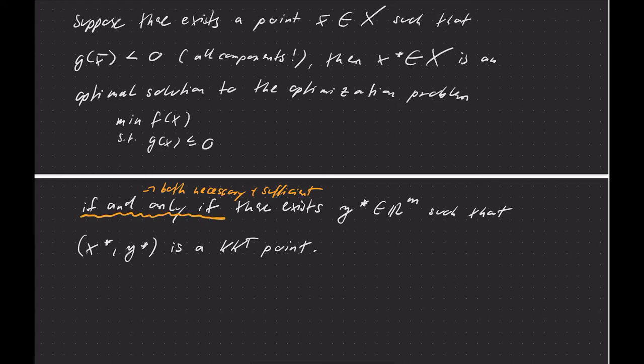One more remark, this condition here that g(x̄) < 0, that such a point exists, that is also referred to as the Slater condition. It's one possible so-called constraint qualification that ensures that KKT holds. If that's not the case, we might run into edge cases where KKT actually does not work anymore, or at least not necessarily sufficient anymore. But usually in practical applications that is the case. So it's often very easy to verify that.